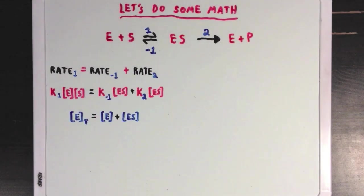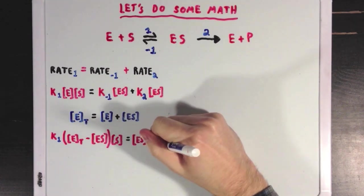Next I'll introduce a new idea and say that the total amount of enzyme available, which we'll call ET or ETotal, is equal to the free enzyme E plus the enzyme bound to substrate, or ES. And using this equation, I'm going to rewrite the E on the left side of our equation as the total E minus the ES, which would be equal to the E we had there before.